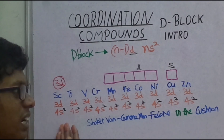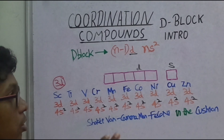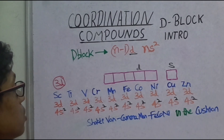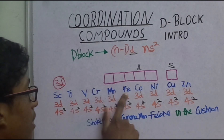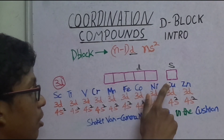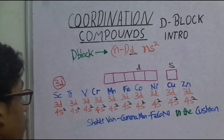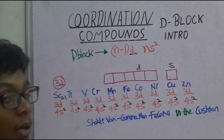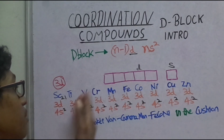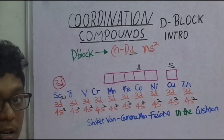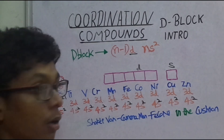Most of the time we are going to focus on the 3D series. What is the 3D series? It includes Scandium, Titanium, Vanadium, Chromium, Manganese, Iron, Cobalt, Nickel, Copper, and Zinc. These are the 3D series elements. Starting atomic number is 21. Calcium (atomic number 20) comes before, then Scandium begins the D-block.